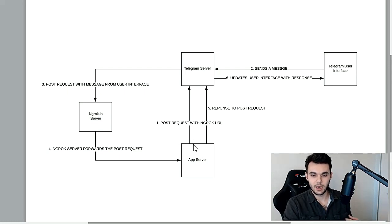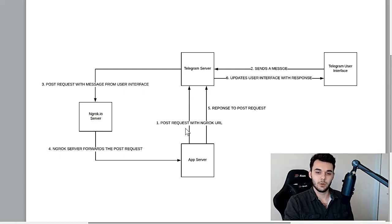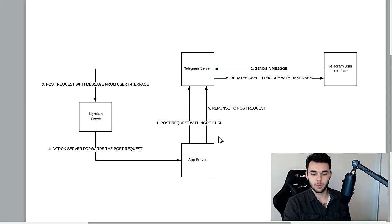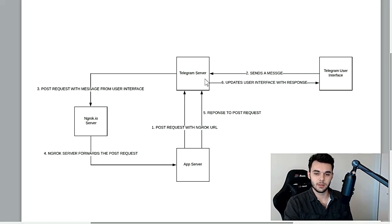Now we can take that and post our response from our app server — it can conditionally respond based on things like the text or whatever information we get — to the Telegram server, and the Telegram server can update the UI. So we have four moving parts here essentially, and we have a little loop right here. This is our webhook. These are our message events, they come through our webhook, our app server gets the information it needs, then it goes ahead and responds to the Telegram server, which in turn updates the user interface.